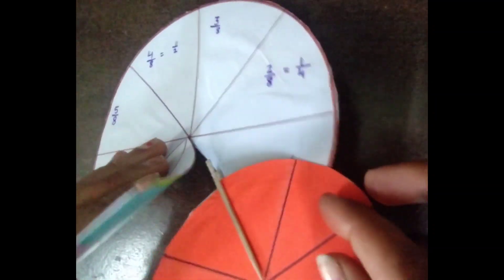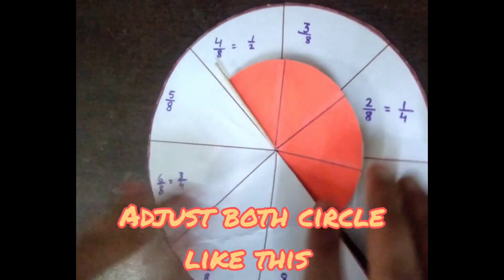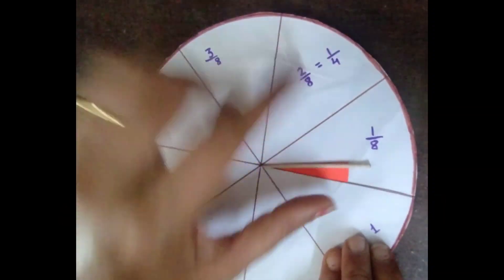Now carefully adjust both the circles with the help of the cut we made on them.